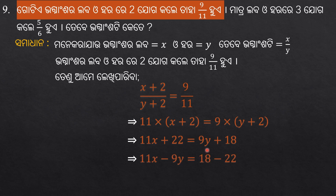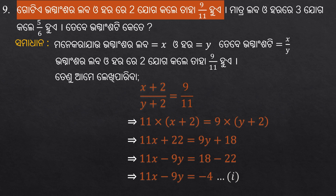Next, 11x minus 9y is equal to 18 minus 22, which gives 9x minus 9y is equal to minus 4. So this is equation 1.